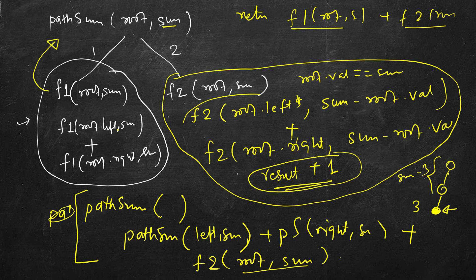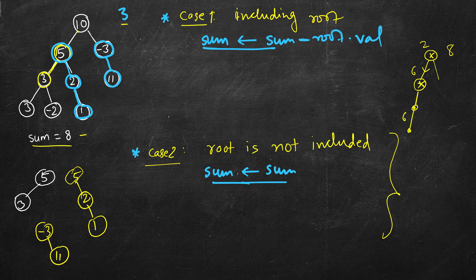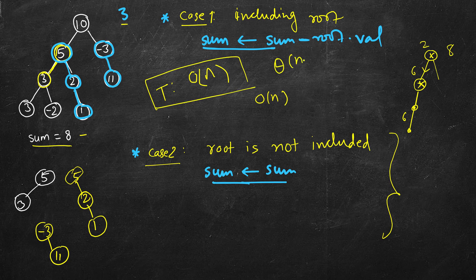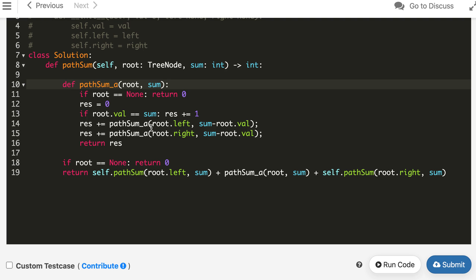For time complexity: f1 traverses the complete tree and f2 also traverses recursively on left and right — so we are doing two traversals, giving O(n), in fact Theta(n). For space complexity, in the worst case (a long tree), all nodes are on the function stack, so that's O(n). If we only count auxiliary space excluding the function stack, we use very few variables, making it O(1).